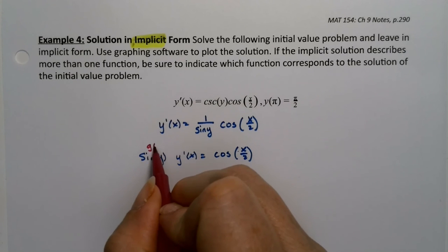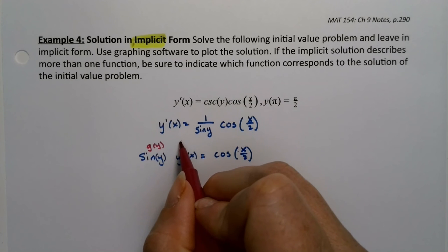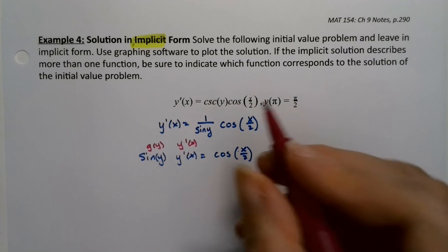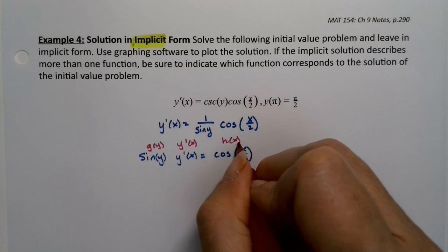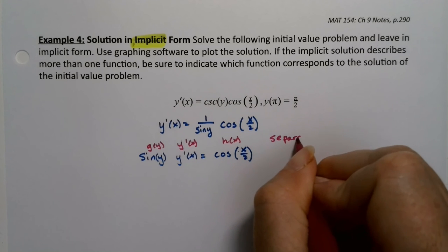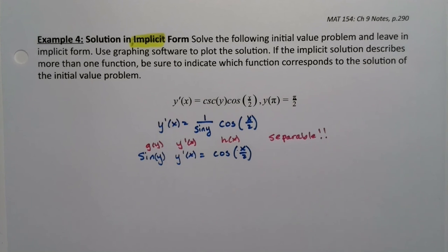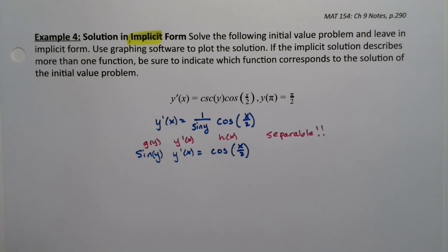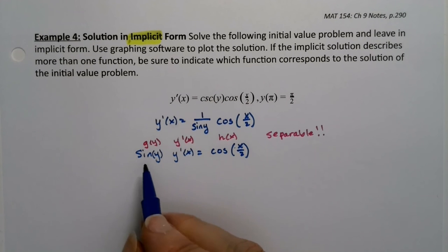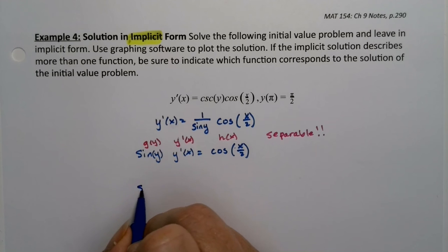I have y'(x) equals cosine of x over 2, and lo and behold, look at that. There's my function of y, there's my dy/dx or my y'(x), and here's my h of x. It's separable, which of course it is. I gave us a whole page to do it, which is a sign. Okay, so now let's solve this.